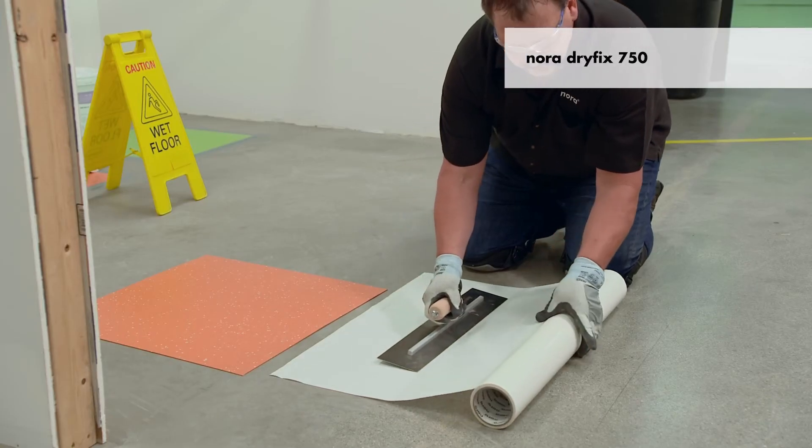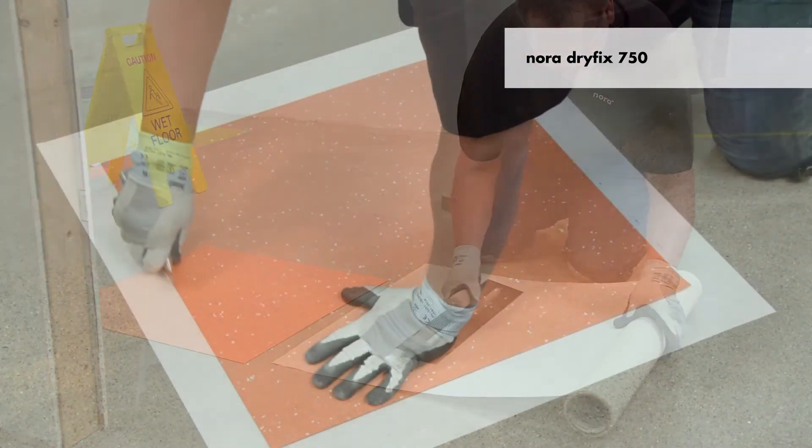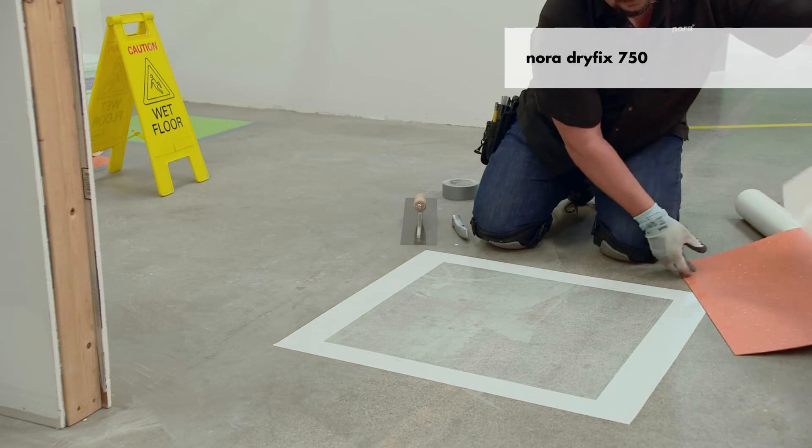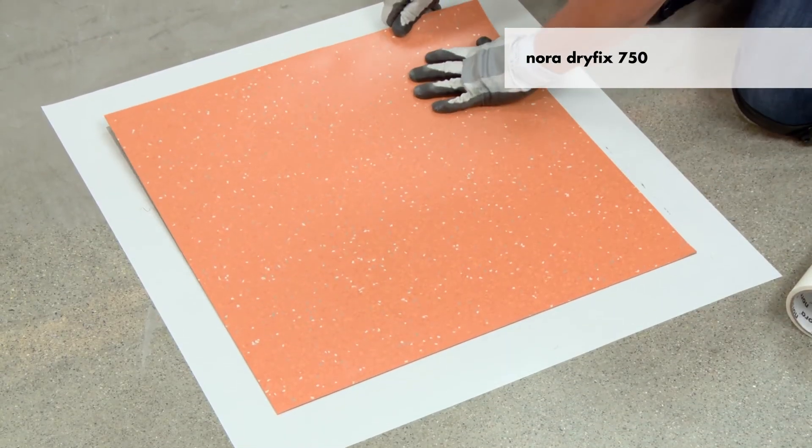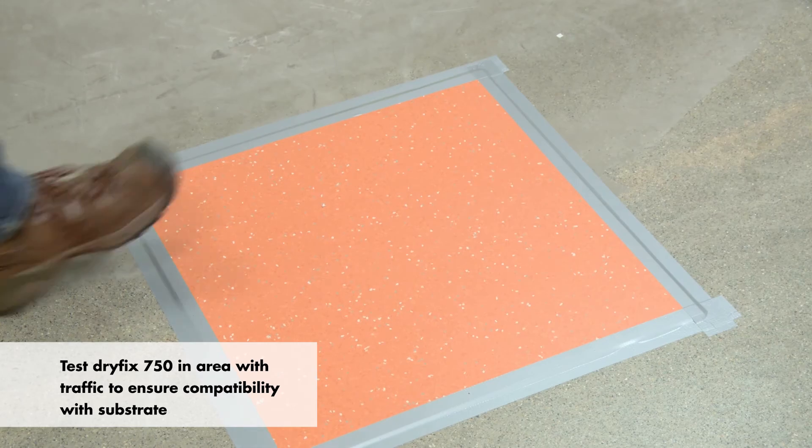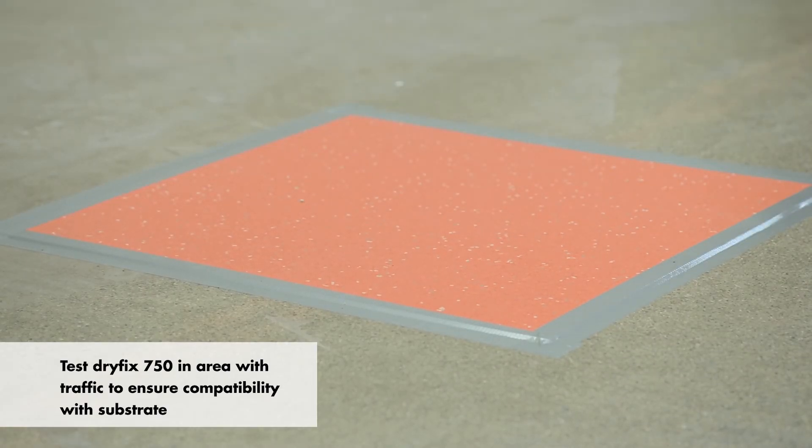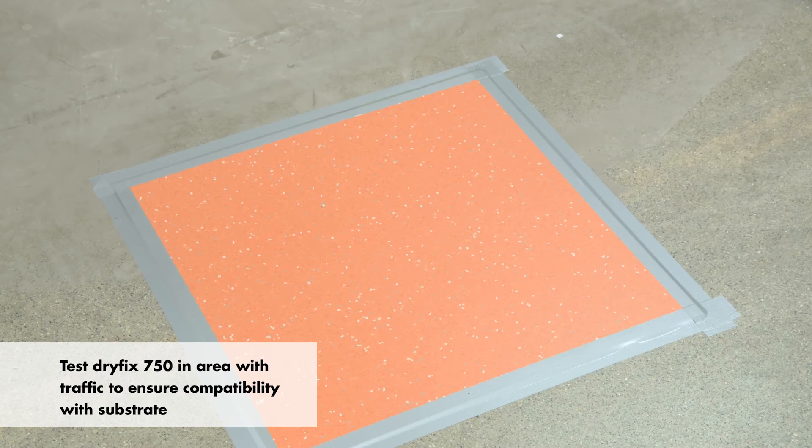The bond test is different for Nora DryFix 750 tape, which is not expected to have the equivalent peel strength of the wet adhesives. These bond tests must be placed in areas with traffic. The main goal is to ensure DryFix 750 is compatible with the substrate.